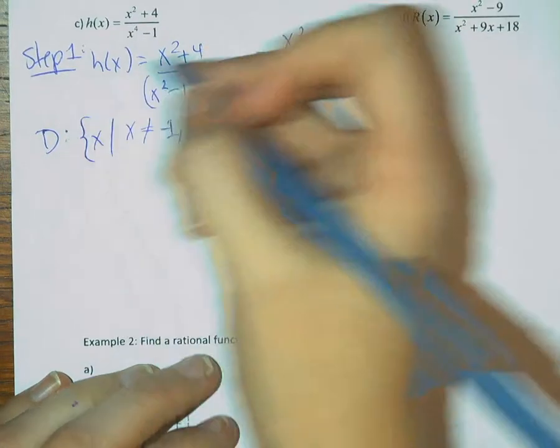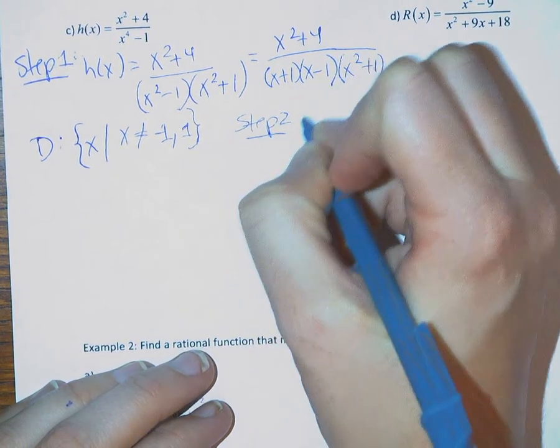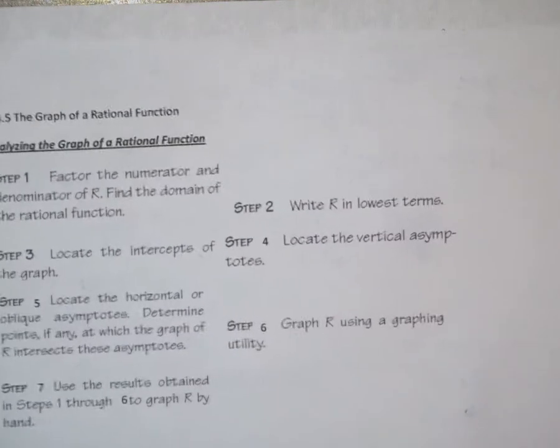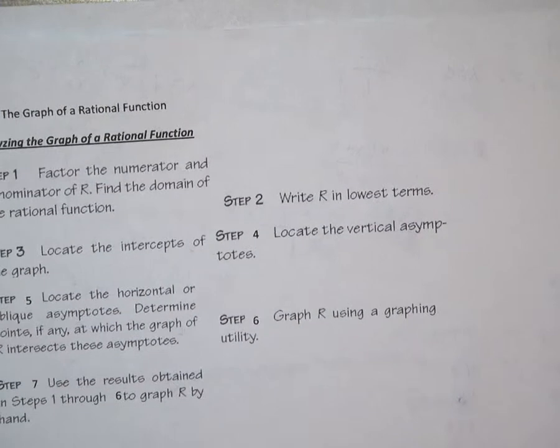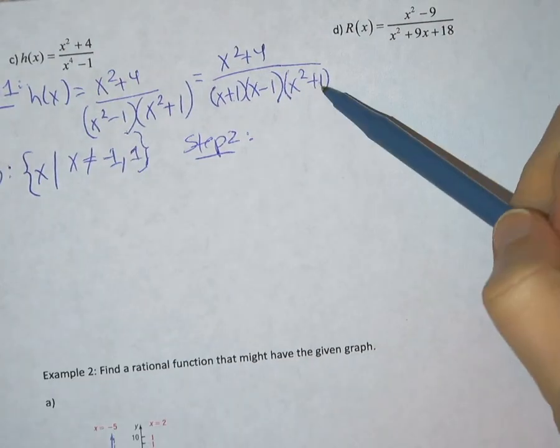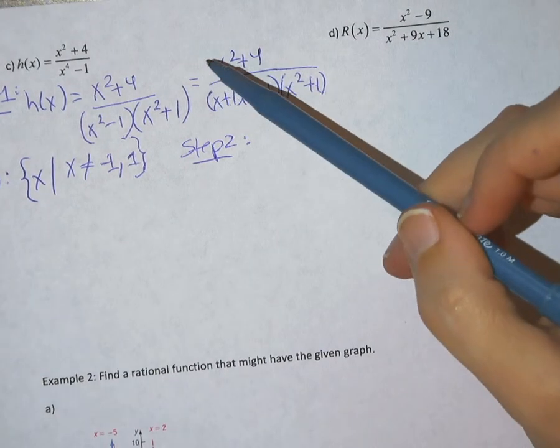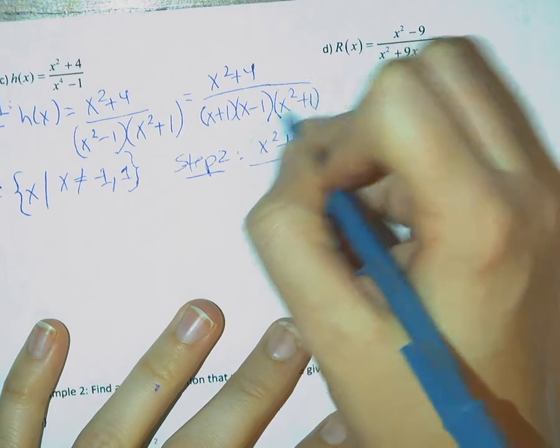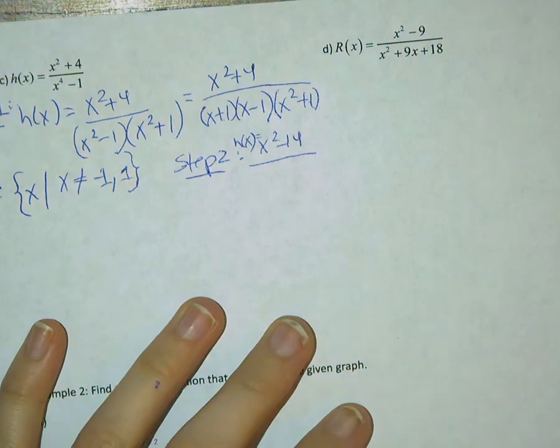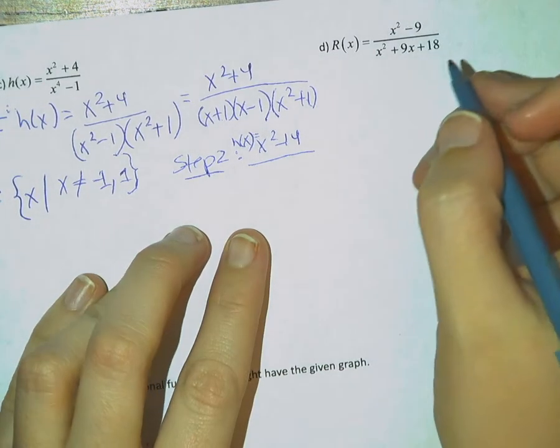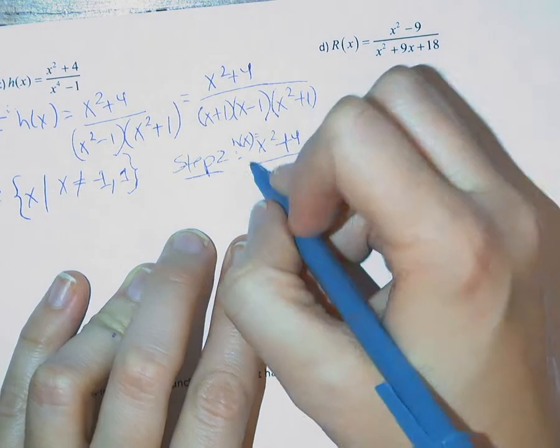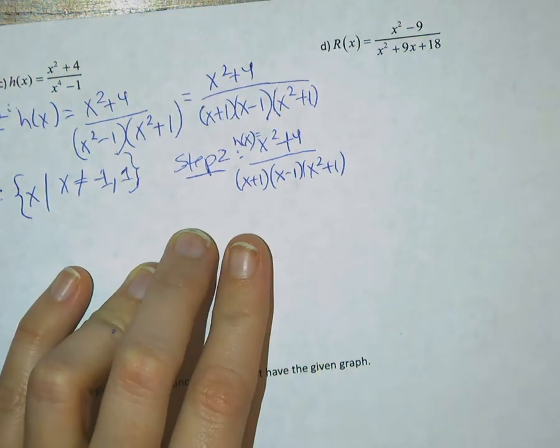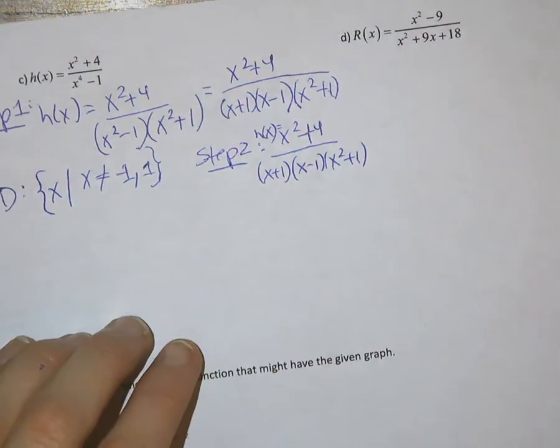Now we can move on to step 2. Step 2 asks us to write the rational function in its lowest terms, meaning to simplify. If we look at this function here, there's nothing really to simplify from the numerator and denominator. So we would just rewrite it as is. x squared plus 4 over x plus 1 times x minus 1 times x squared plus 1. Nothing to cancel for this one. So step 2 is very easy.